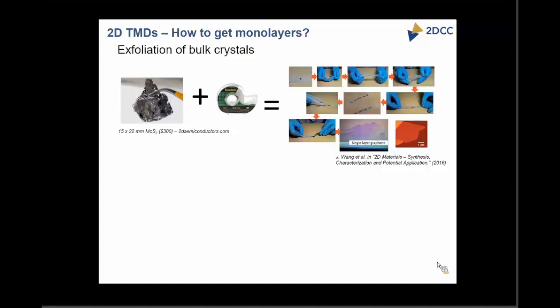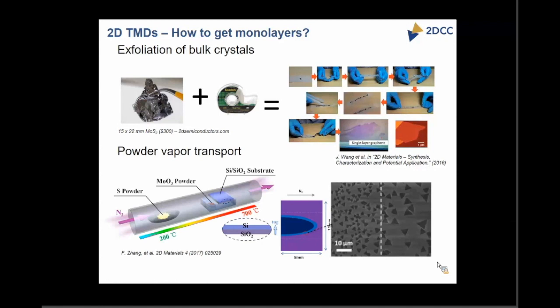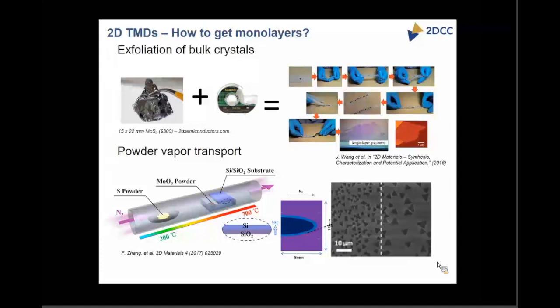One method of going around it is to grow these materials. One such technique is powder vapor transport, where you have precursor powders of molyoxide and sulfur sitting inside the reactor very close to your substrate. As you heat it up, the molyoxide vaporizes, the vapors react in the gas phase, and then deposit on the substrate. This gives you MoS2 films with large enough domains, but there is non-uniformity in the growth, making wafer-scale growth difficult. And if you want to grow heterostructures without exposing them to ambient, this configuration makes that difficult as well.